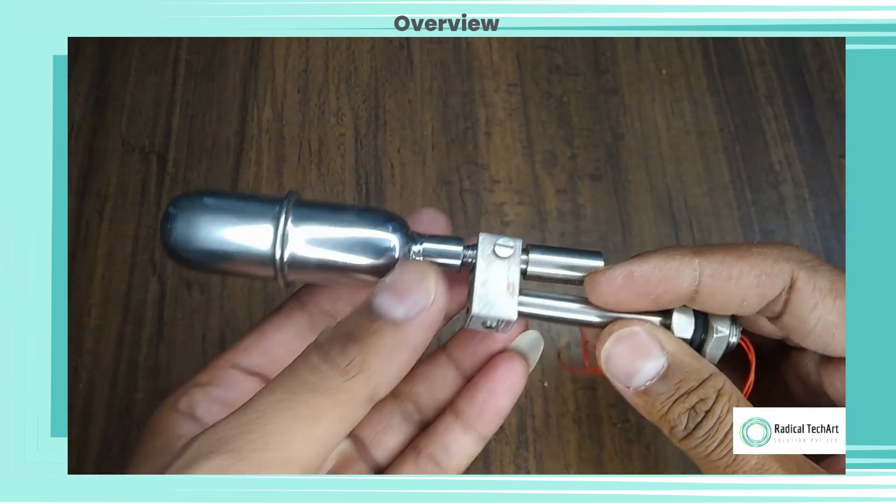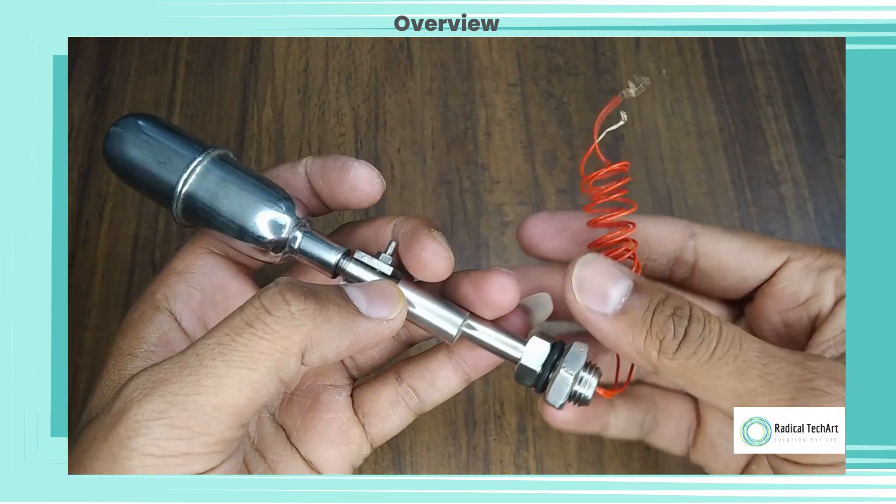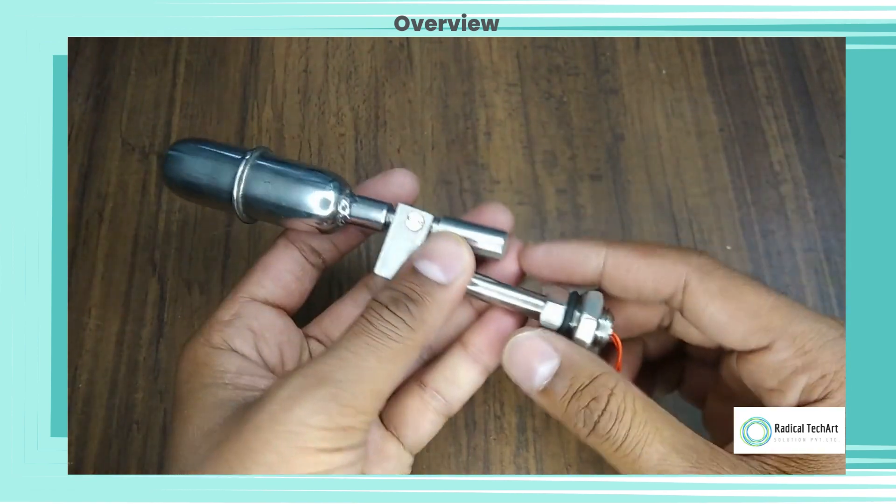The typical construction of a side-mounted level switch consists of a float, a lever arm or rod, and a switch mechanism.